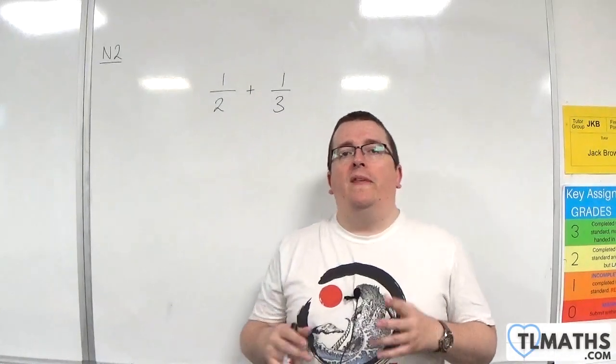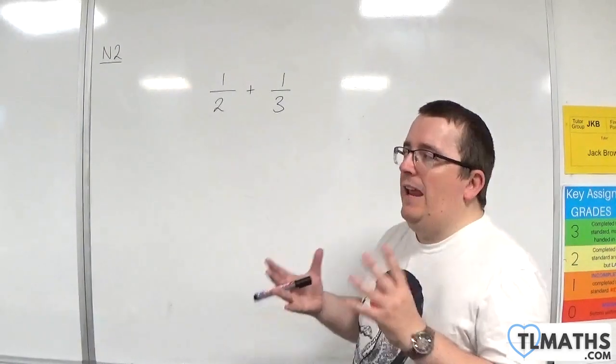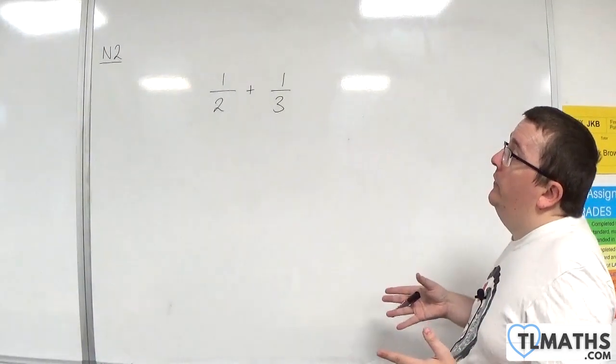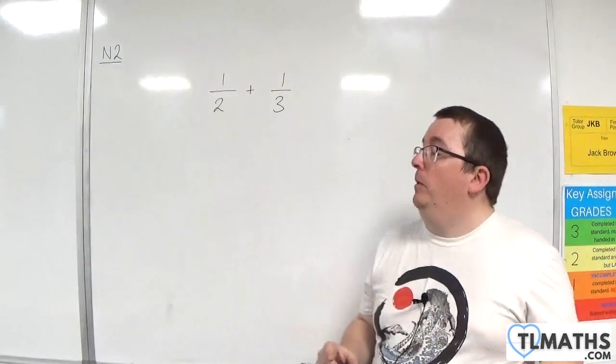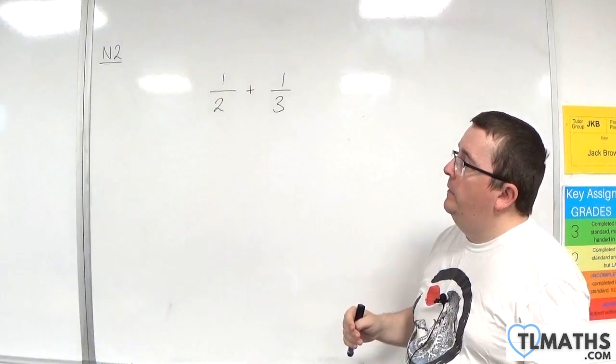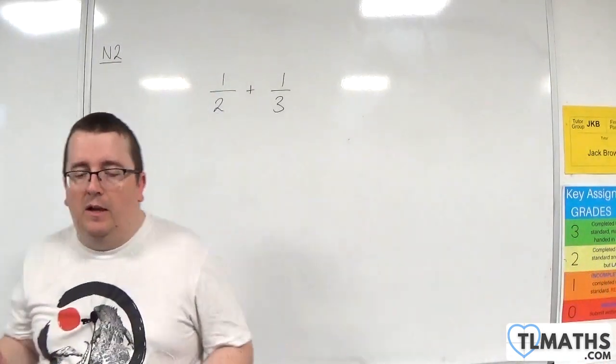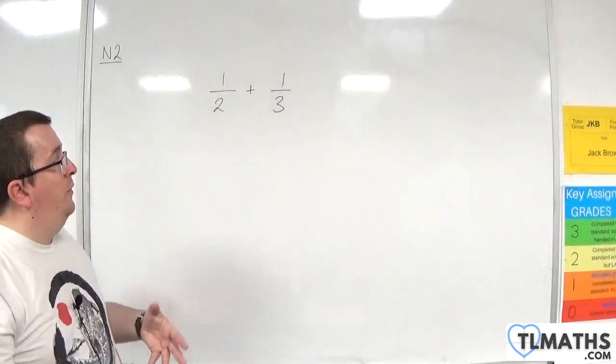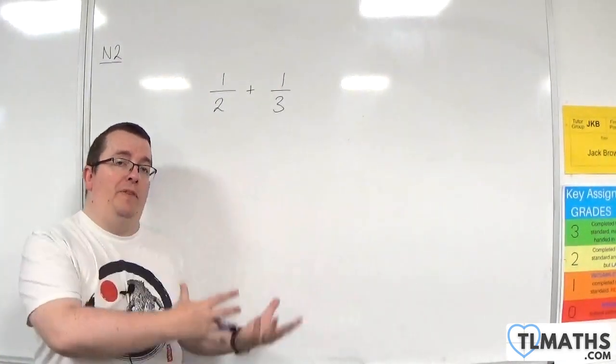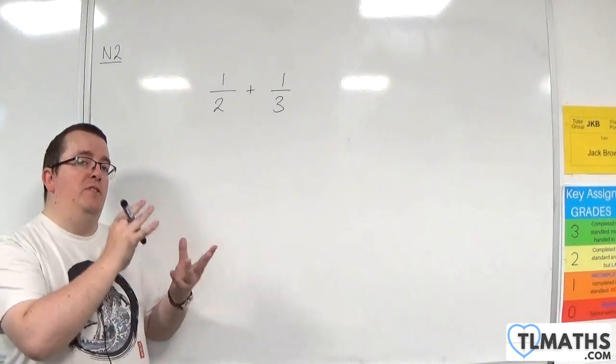Adding fractions when they have the same denominator is quite straightforward. If they have different denominators, then we've got a bit of a problem. We've got here 1 half plus 1 third. What I need to do is think about turning both of these fractions into something else so that they then have the same denominator.